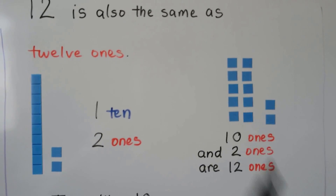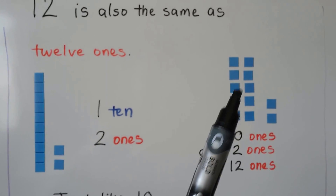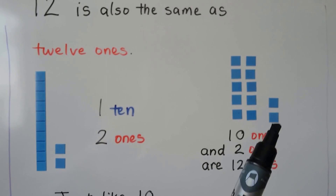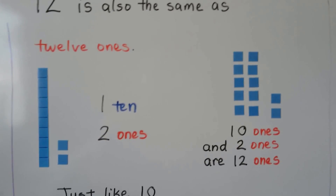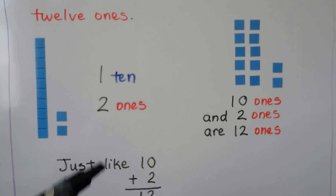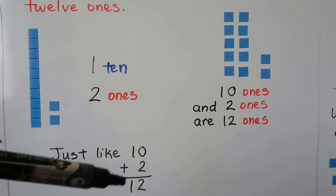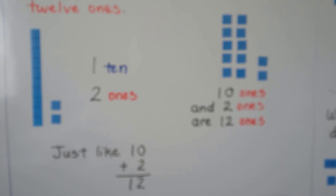That makes 12 ones — 10, 11, 12. Just like 10 plus 2 is equal to 12.